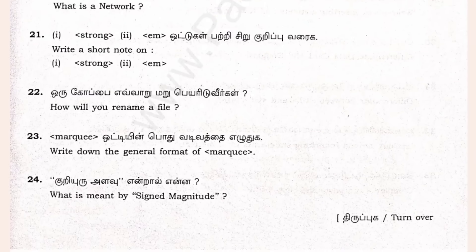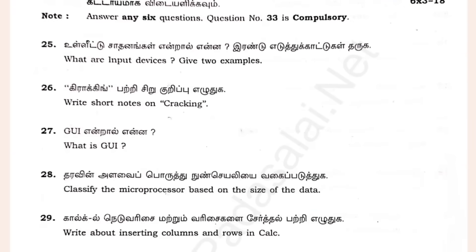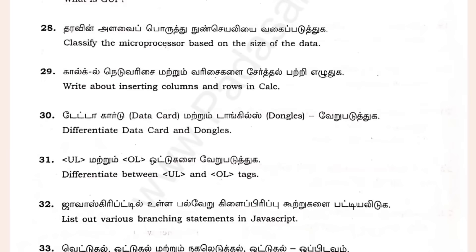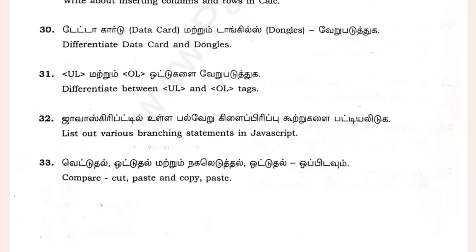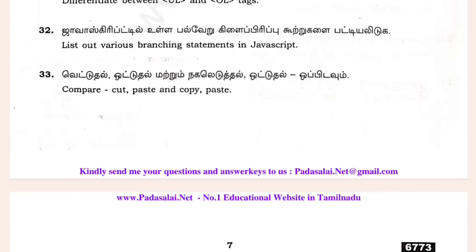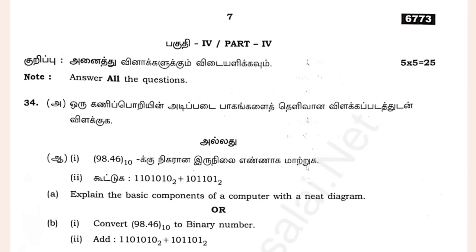What is meant by Sign and Magnitude — it is a note. Cut time 4. Input devices are quite easy; right-in charts are cracking. What is GUI is very important. Classified Micro Processor is very important. Inserting columns and rows of prevents — data card is done. Cut, copy, paste is very important. That is also very simple; this is a 5-mark question, it is very simple.